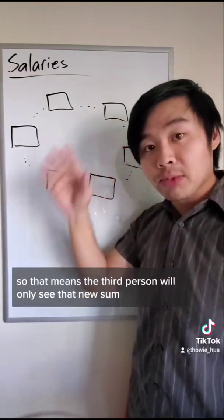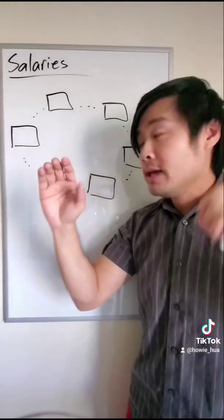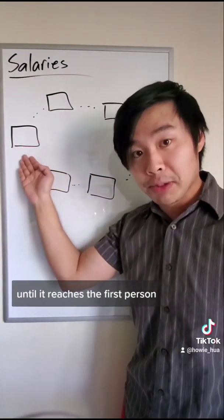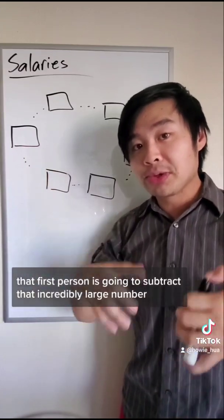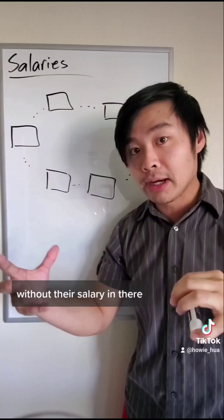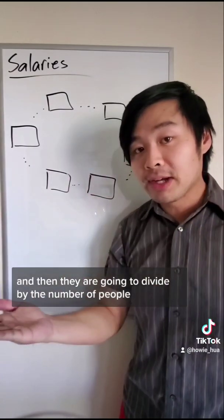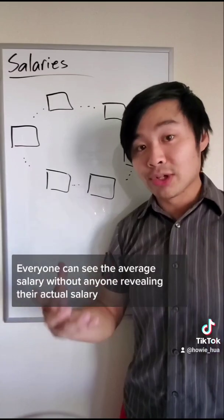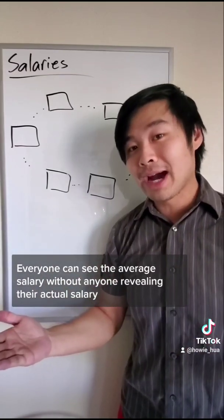So that means the third person will only see that new sum. They're going to keep adding their salaries on that new piece of paper until it reaches the first person. That first person is going to subtract that incredibly large number without their salary in there. And then they are going to divide by the number of people and there you have it. Everyone can see the average salary without anyone revealing their actual salary.